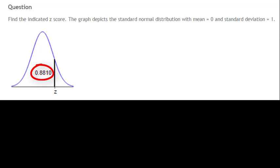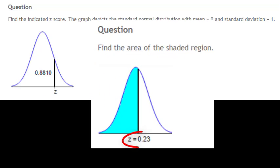The number 0.8810 in this problem is meant to depict the area under the normal curve found to the left of the vertical line going through the indicated z-score. It is important to understand the difference between this kind of problem and problems in which we're given the z-score and then asked to find the area under the normal curve.